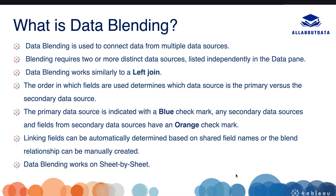Data blending works similarly to a left join. A left join gives all the data from the left side table and the matching records from the right side table. Data blending divides data into a primary data source and a secondary data source. This is decided based on the order in which fields are used. If we use a field from a data source first, it becomes the primary data source, and the other becomes secondary.